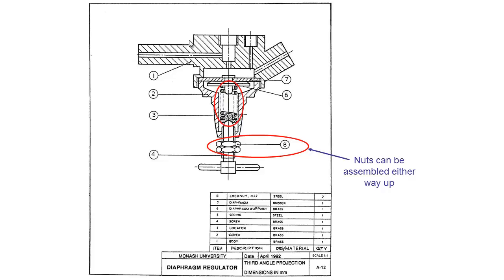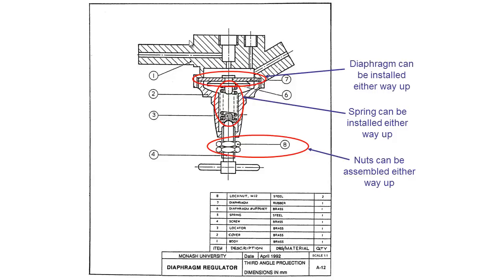For these nuts it doesn't matter which way, but some types of lock nuts require to go on one way or another; otherwise they can't actually be fastened on properly or they won't perform their job correctly. We also have this spring — this spring in particular can also be installed either way up, and in this case it doesn't matter. We have a diaphragm that can also be installed either way up; sometimes a diaphragm might have a special lip and can only be installed one particular way, but that is not the case with this particular diaphragm. So for this drawing there are no special assembly instructions required.